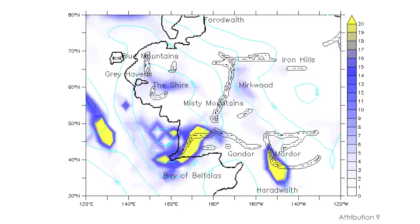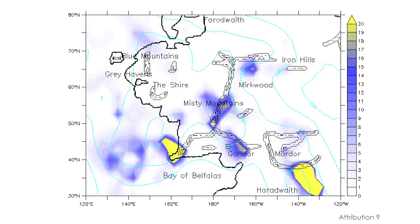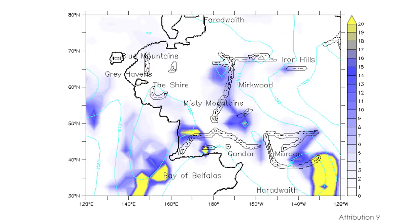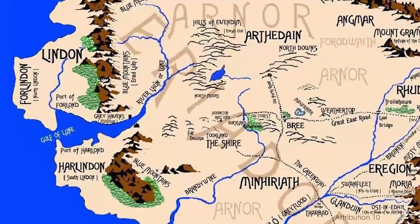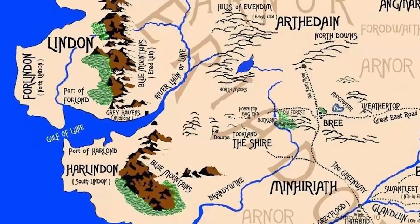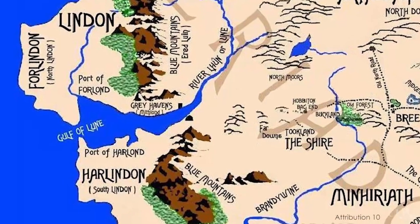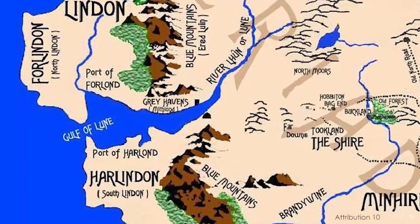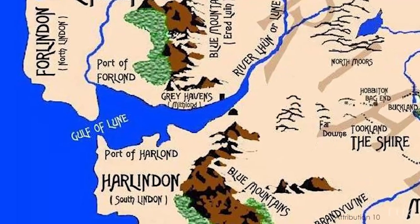An interesting finding from Lunt's climate model was an alternative scientific explanation of how the elves left Middle Earth. An interesting place is somewhere called the Grey Havens, just on the west coast of Middle Earth. In the books it turns out that the elves, when they leave Middle Earth and go back to their homeland, set sail from the Grey Havens and go west to their own country.